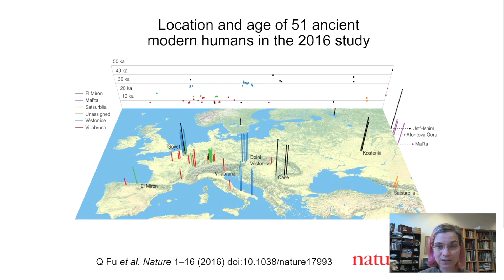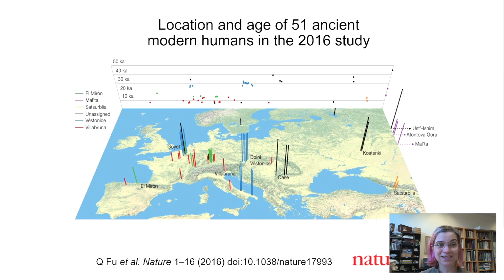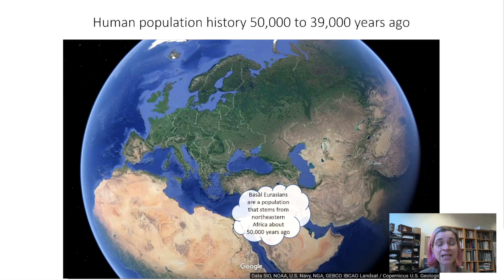This map gives you a sense of where the individuals are from across Eurasia. I love the way they've done this figure because it points to where the specimens, the individuals, the people are from — the ancient genomes — but it also gives you a sense of time as well. You have the geography and a y-axis that gives you time. I find that visually very pleasing.